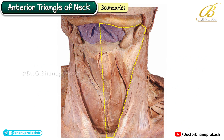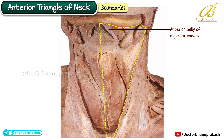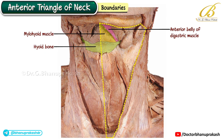In the submental region, the anterior belly of the digastric muscle, the mylohyoid muscle, and the hyoid bone form the submental triangle, which is also clearly visible here.